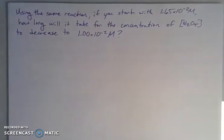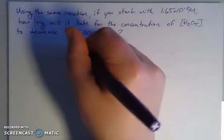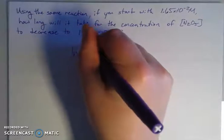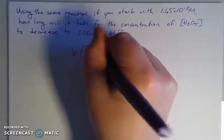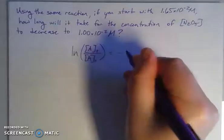Let's look at another example. Let's do the same reaction starting with the same concentration. Now how long will it take for that concentration to decrease to this other concentration? If we think about this from the same perspective, we have the concentration ratio at time T over time zero equals negative KT.